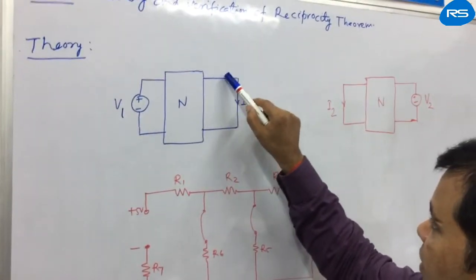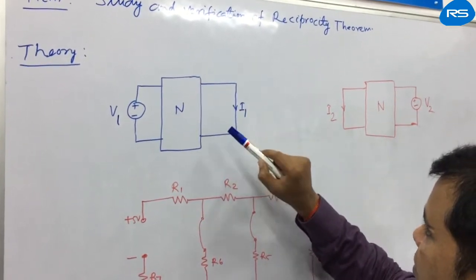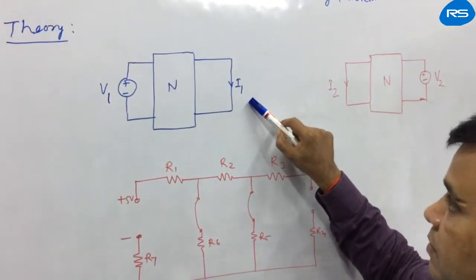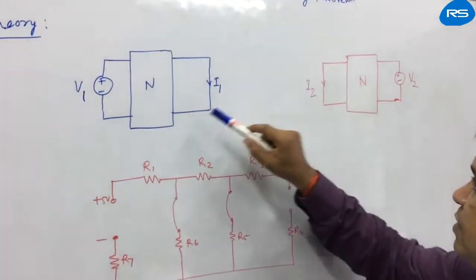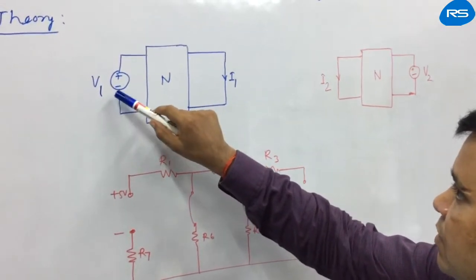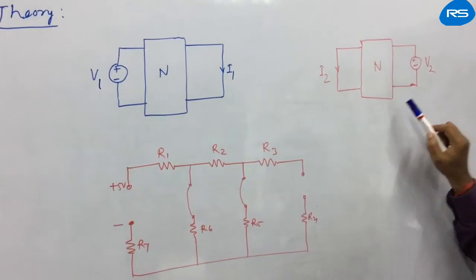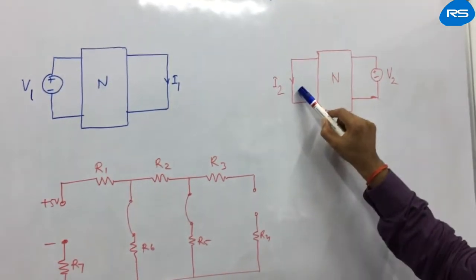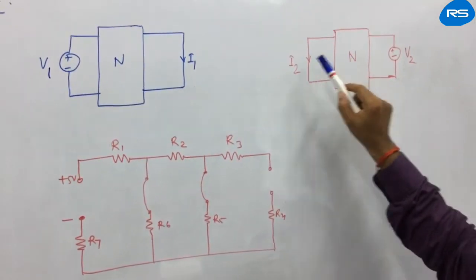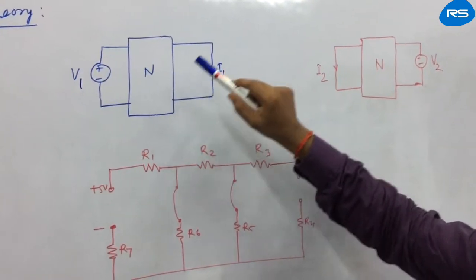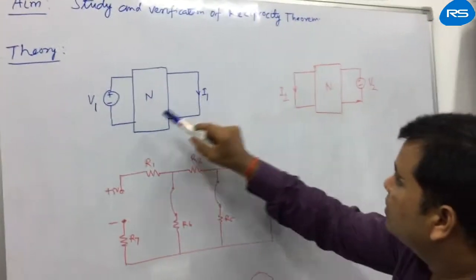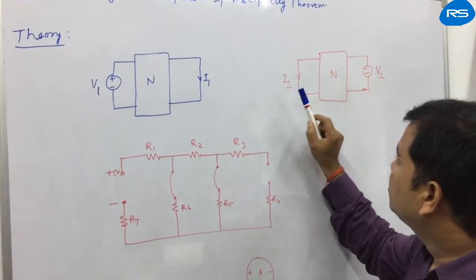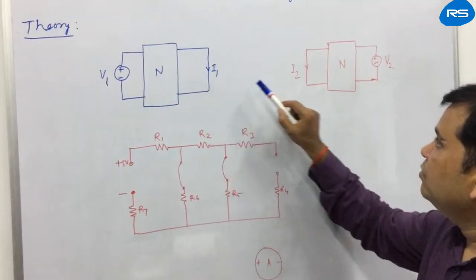Now we replace this voltage source from input to output of the same network and measure the current at input terminals. So if these voltage sources are equal, there will be an equal amount of current. That is, I1 will equal I2 in the case of V1 equal to V2.